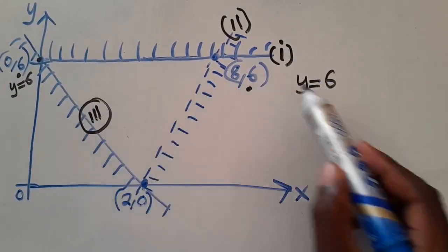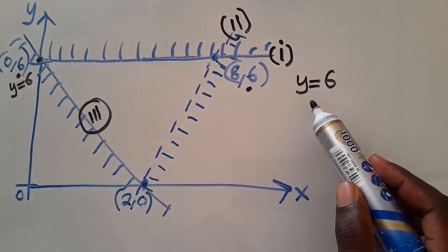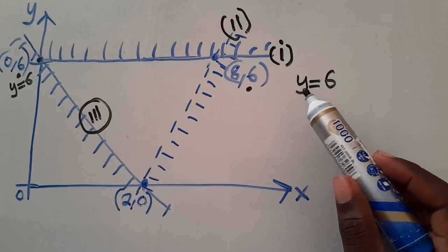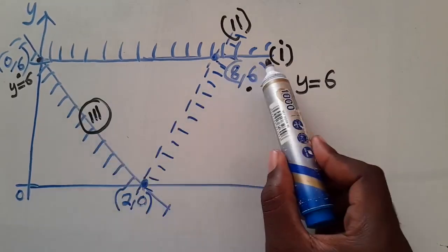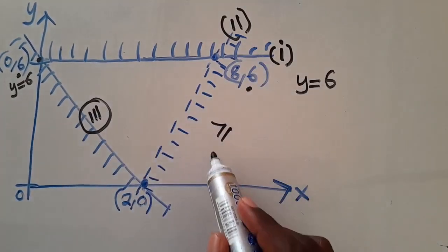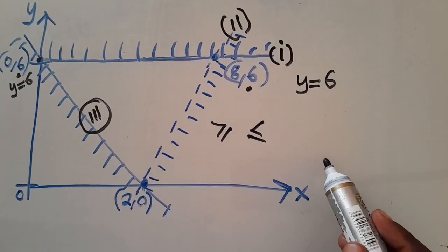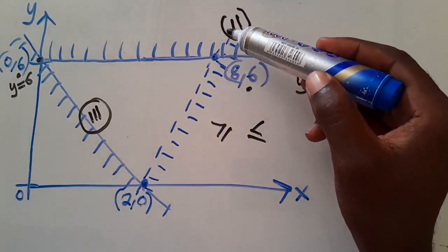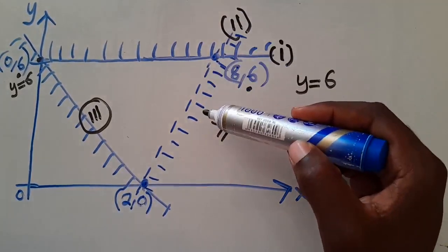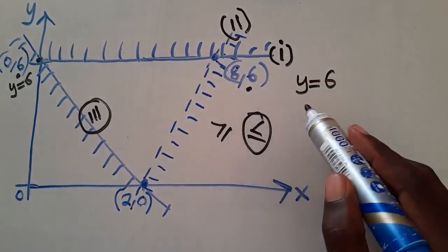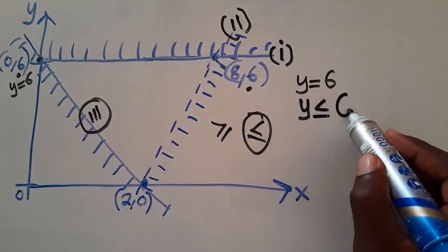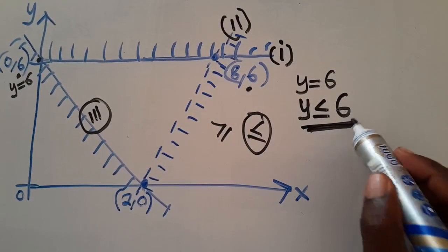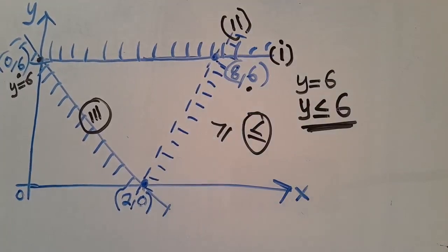This is a solid line, so you use the less-than-or-equal-to or greater-than-or-equal-to sign. They have shaded the upper part, so you get the opposite — the lower part. That gives you y less than or equal to 6. This is your answer for inequality one. Even if you start with a different inequality, as long as you provide all three inequalities, it is fine.